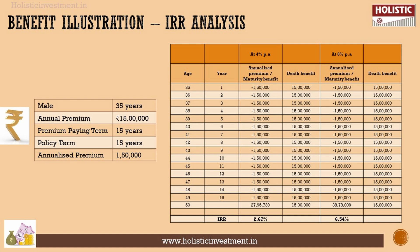Let's look at an example. We will invest for a 35-year-old with a sum assured of 15 lakhs, a premium pay term of 15 years, and a policy term of 15 years. Annual premium is 1 lakh 50,000 rupees. We will choose the Maximizer option, which is the wealth creation variant.